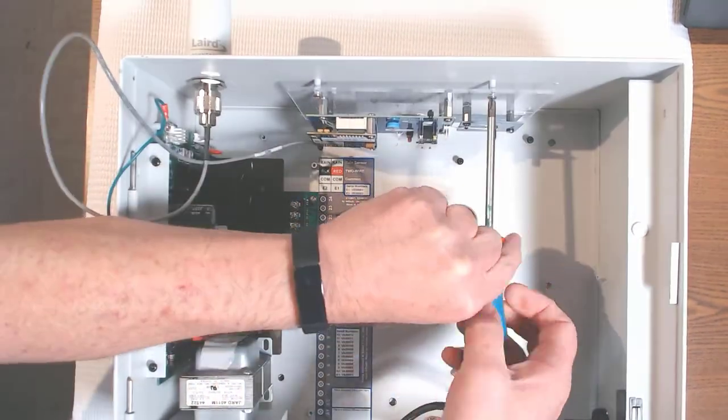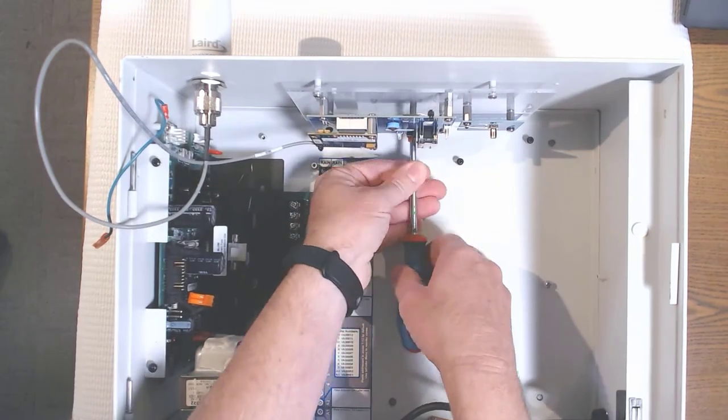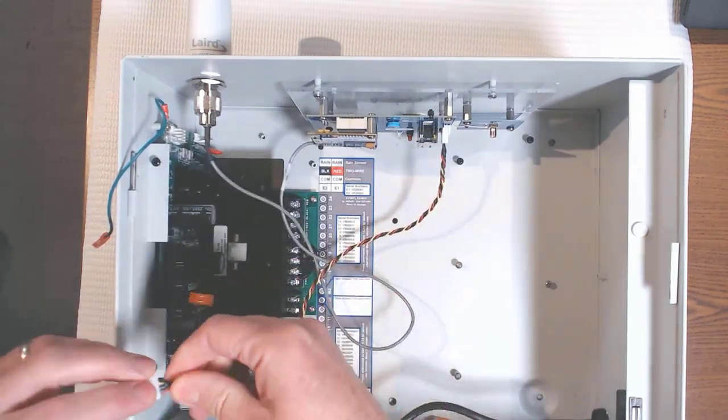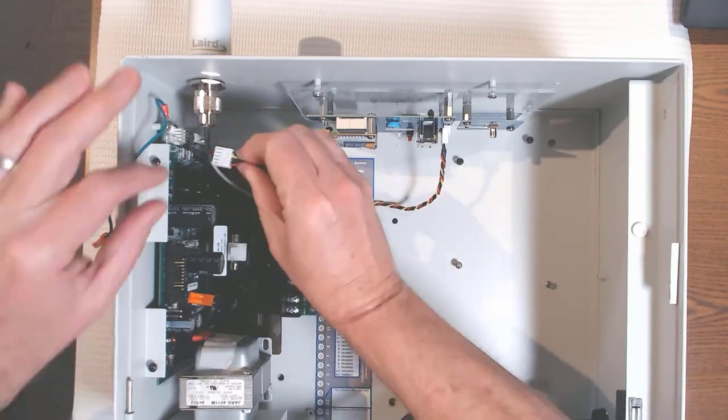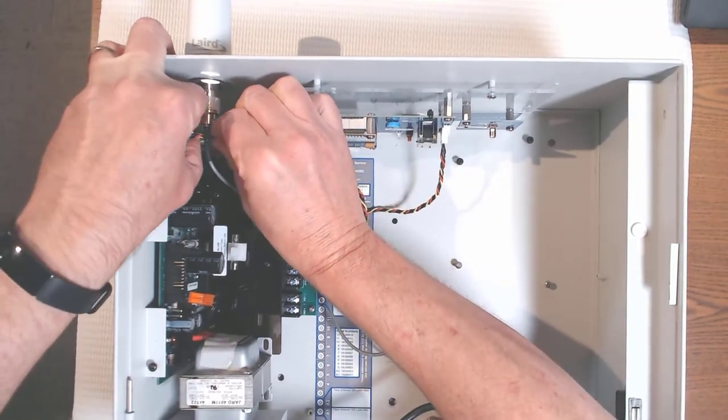The cell module is held on with three screws. That last one's a little harder to find all the way down at the bottom. Connect the power cable to the cell module and then to the power board at the port labeled COM2.